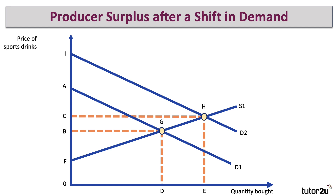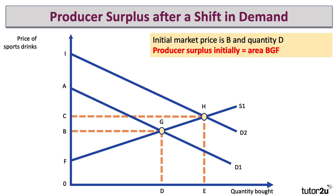But what about the impact on the producer? Initially the market price is B and the quantity bought and sold is D. So producer surplus — the area above the supply curve and below the price — is the area B, G, F.